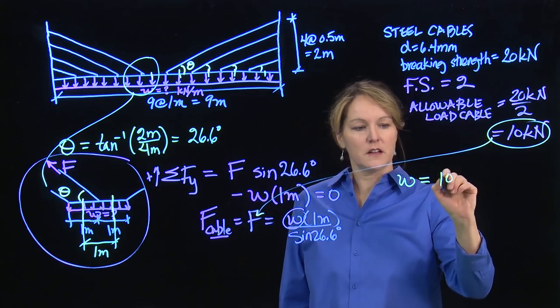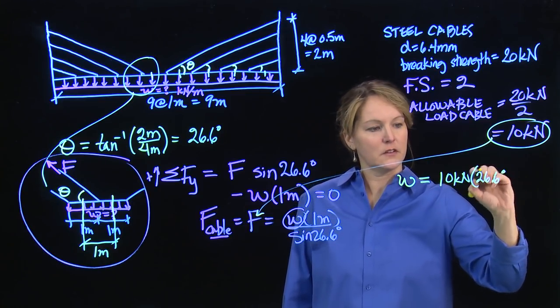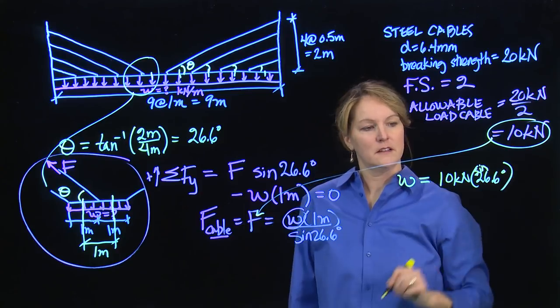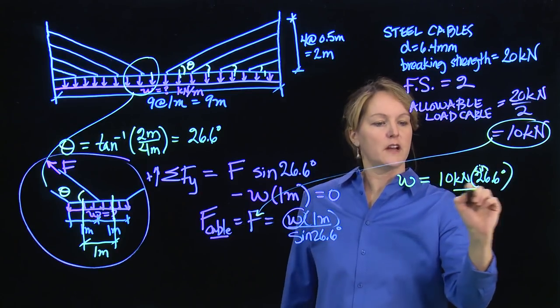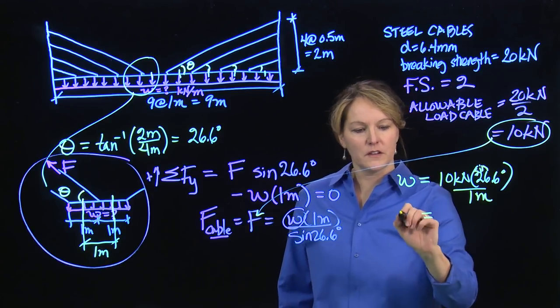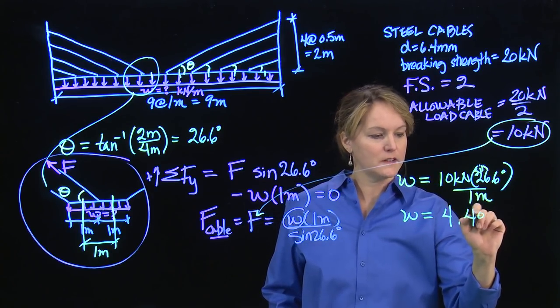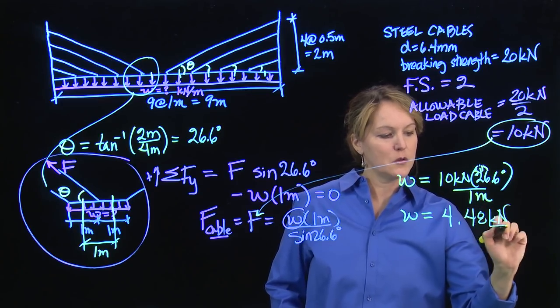W will be the 10 kilonewtons times the sine of 26.6 degrees. It would make sense to just take that divided by one meter. I can solve for the allowable load, and I get 4.48 kilonewtons per meter.